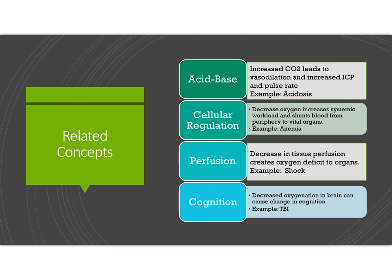Anemia, which relates to cellular regulation, involves declining red blood cells, which leads to a decrease in oxygen delivery. This creates what is called a shunt, decreasing the amount of oxygenated blood delivered to your organs. You can read through how oxygenation issues also affect perfusion and cognition.